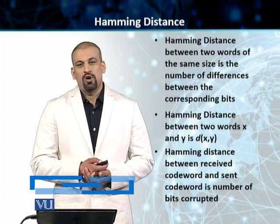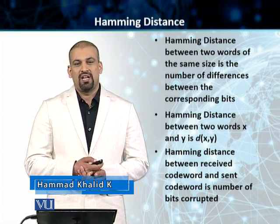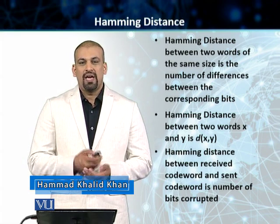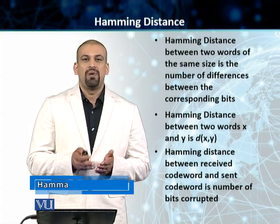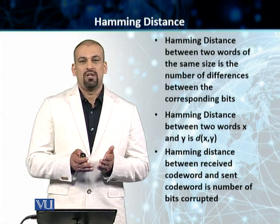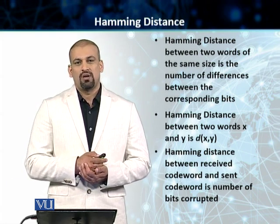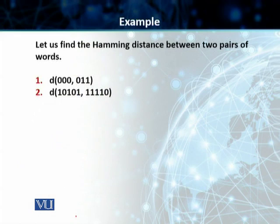This Hamming distance — the concept of Hamming distance is very important in error detection, because the Hamming distance between the two words is actually telling us how many bits are corrupted between the two words that we are comparing. How do we find this Hamming distance? We actually do an exclusive OR operation between the two code words that we are given. For example, in this case we have got two pairs of words.